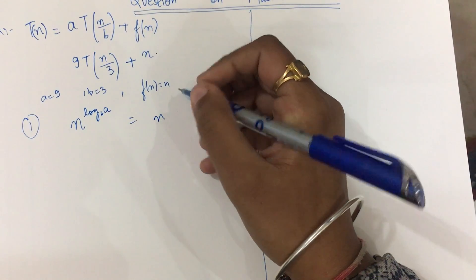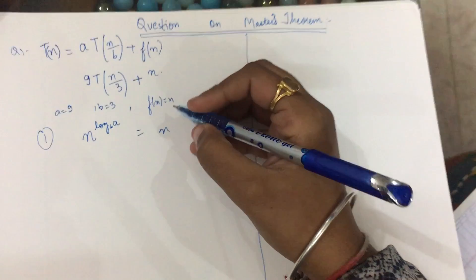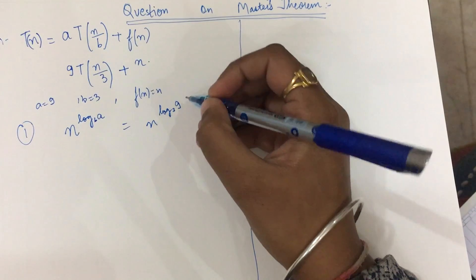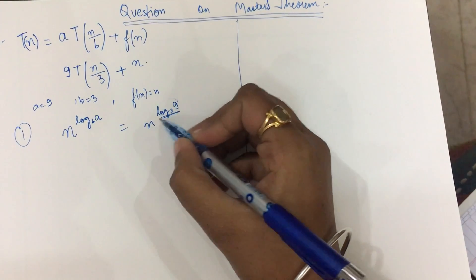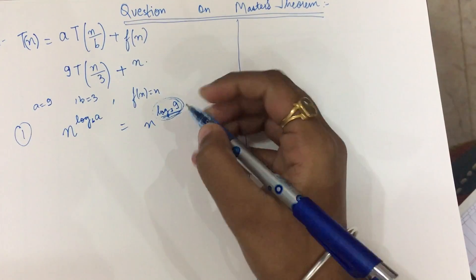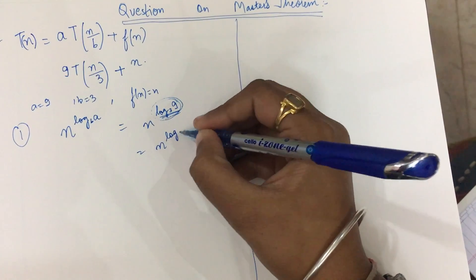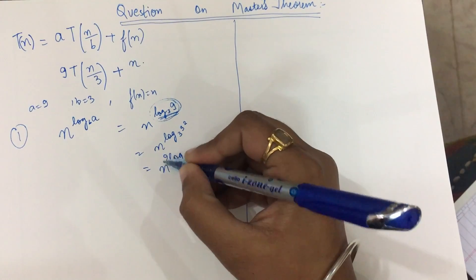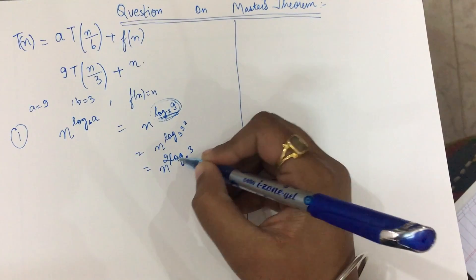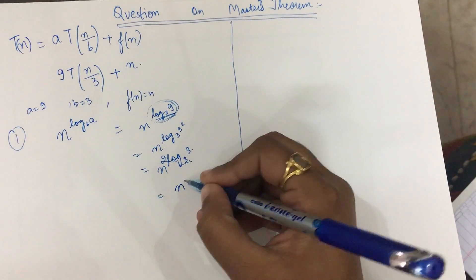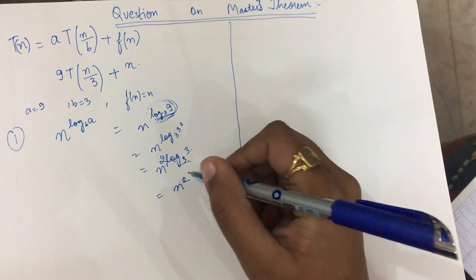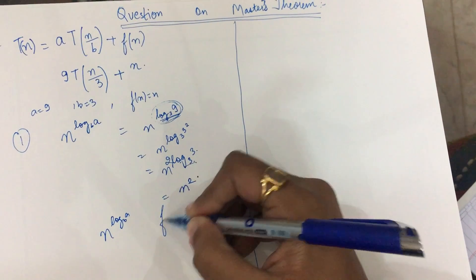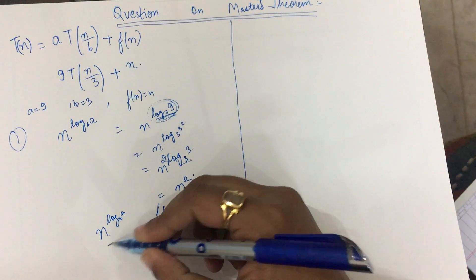So n^(log_b a) is equal to n^(log base 3 of 9). Since 9 = 3², this becomes n^(log base 3 of 3²) = n^(2 · log base 3 of 3) = n^(2·1) = n². Now what I'll do is compare n^(log_b a) with f(n).